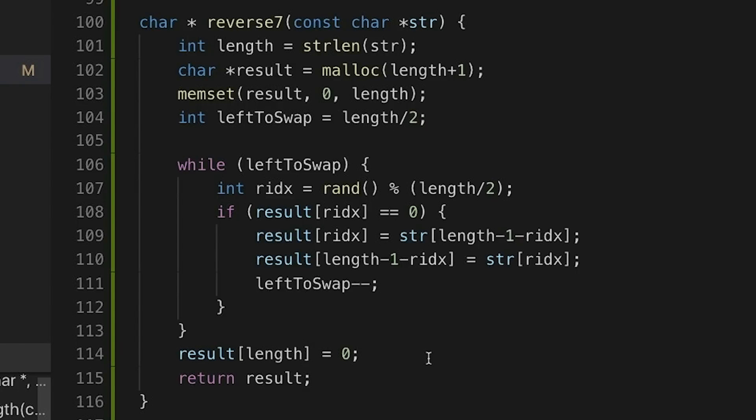Intuitively what this version does is just pick a random character in the front half of the string. If it and its mirror character haven't been put into position yet, then it swaps them and puts them in position. Then it picks another random character and does this all over again until it has put the right number of characters into position.